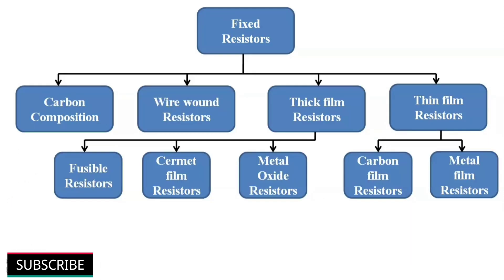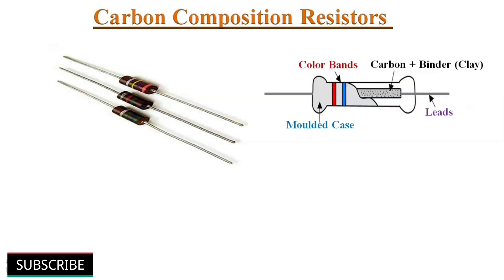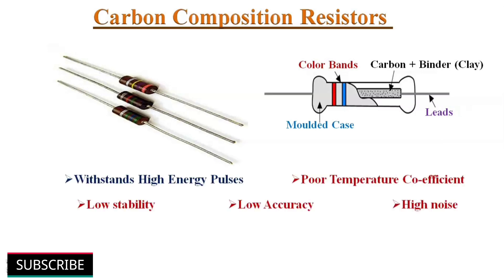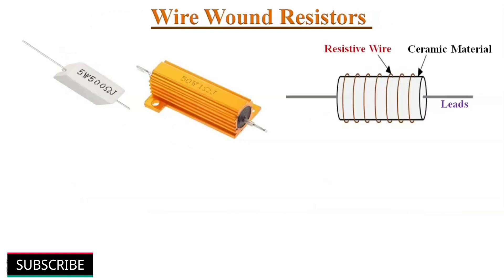Now, fixed resistors. They are classified into different types depending upon their manufacturing process and the material used. We will discuss them one by one. Carbon composition resistors. These resistors are made up of carbon particles and binders like clay. These type of resistors are very cheap and used in applications dealing with high voltage power supplies and current limiting circuits. On the other hand, they are less stable, means their temperature coefficient is very high and also makes high noise, so they are less accurate.